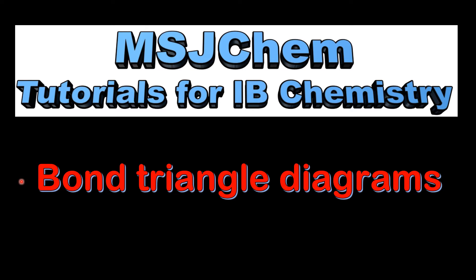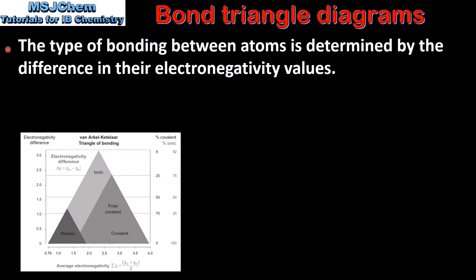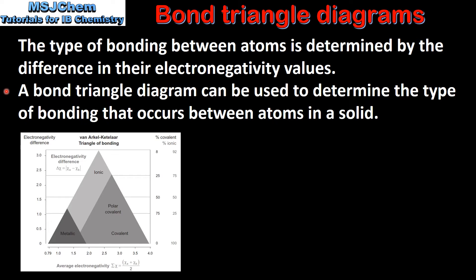This is MSJChem. In this video I'll be looking at bond triangle diagrams. The type of bonding between atoms is determined by the difference in their electronegativity values. A bond triangle diagram can be used to determine the type of bonding that occurs between atoms in a solid.